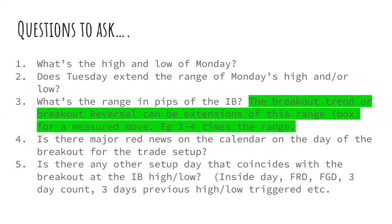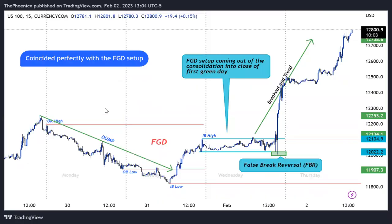Is there any other setup day that coincides with the breakout at the initial balance high or low? Examples include inside day, first red day, first green day, three-day count setup, three-days previous high/low triggered setup. I'll elaborate on all of those in different videos throughout this series. The first green day setup: when you have a day or several days that dump price, and then after the dump you have a day where price closes above the opening price of that day — that makes it a first green day after the dump.